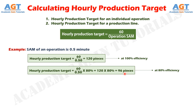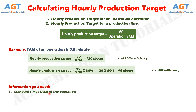So, if we list down the information you need for calculating hourly production target: Number 1, the standard time or standard allowed minute of the operation. And number 2, the average efficiency of the line.